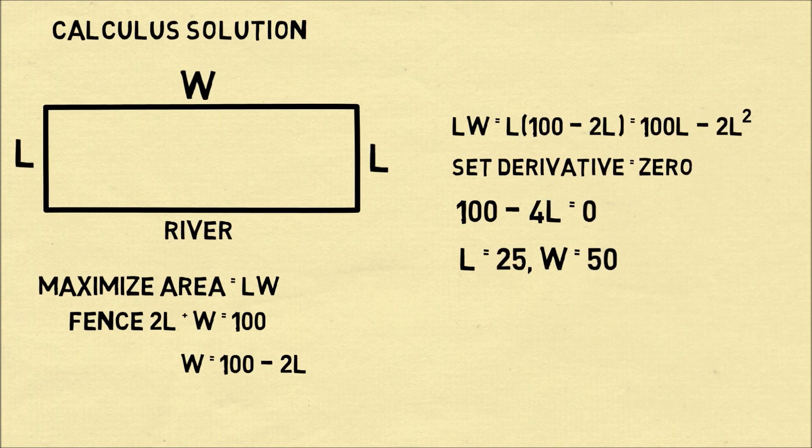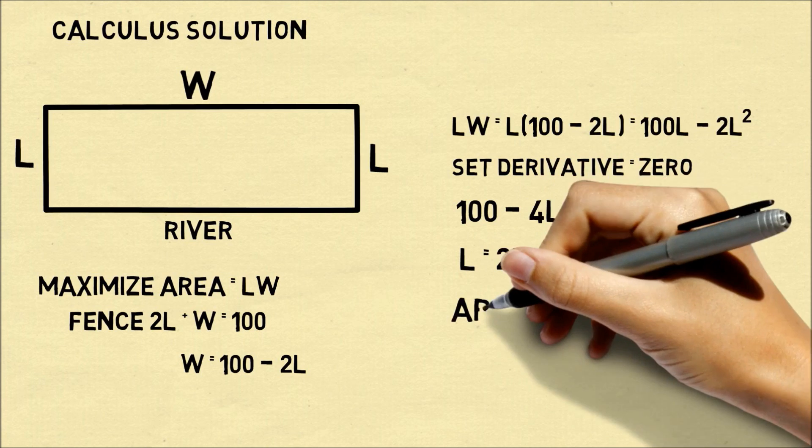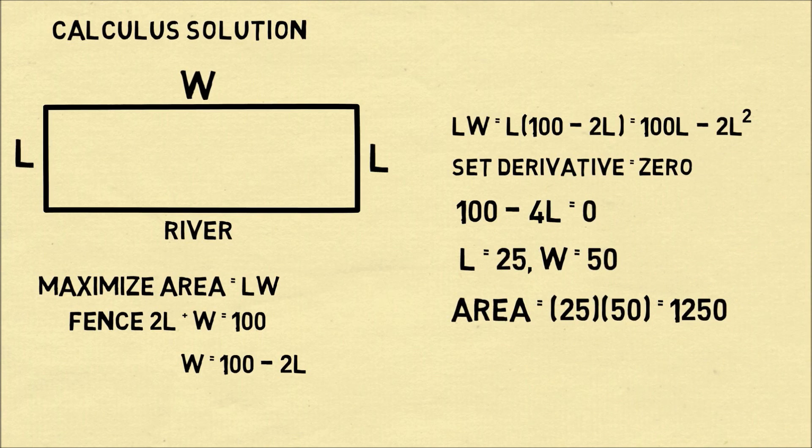We'll solve this for L equals 25 and then we'll solve that W has to equal 100 minus 2L which is therefore 50. So the largest area we can enclose is 25 times 50 which is 1,250.